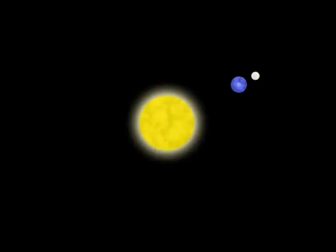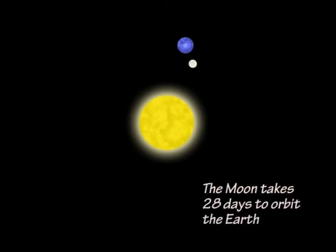Just as the Earth orbits the Sun, the Moon orbits the Earth once every 28 days.